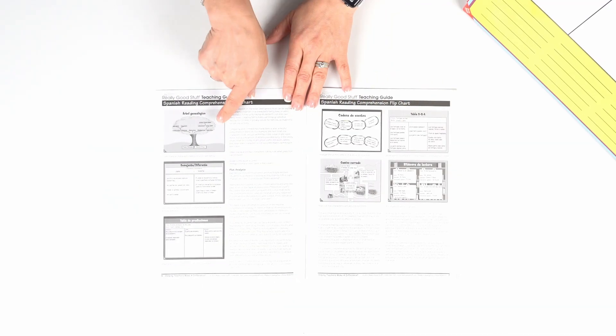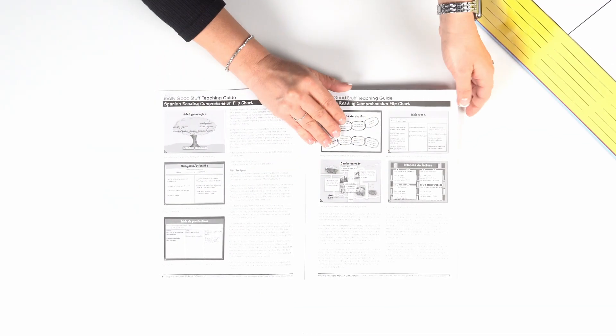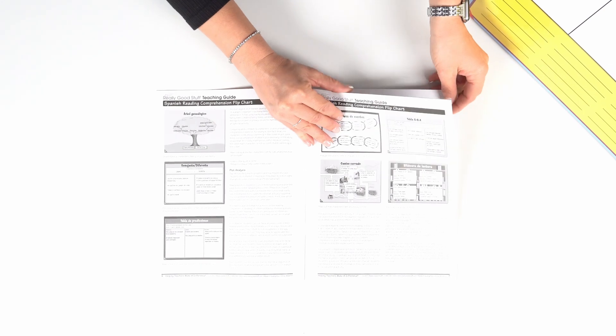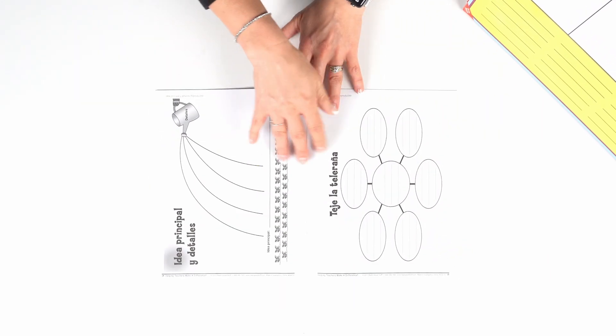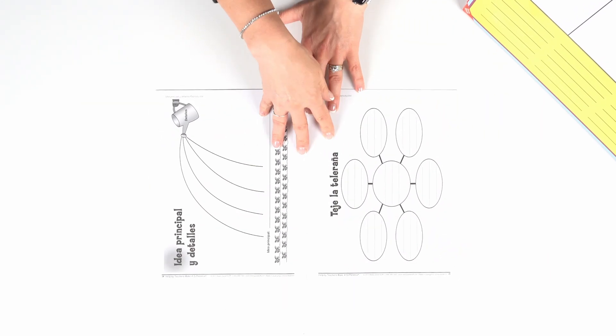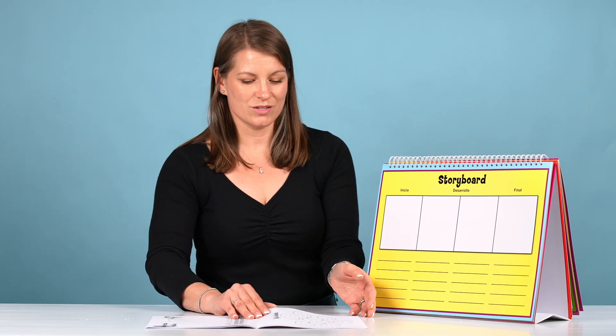This chart comes with an activity guide, which will walk you through how to use each of the 16 different graphic organizers. It also gives reproducibles, so if you want to demonstrate to your class and then have them go work on their own, this gives you the opportunity to do so.